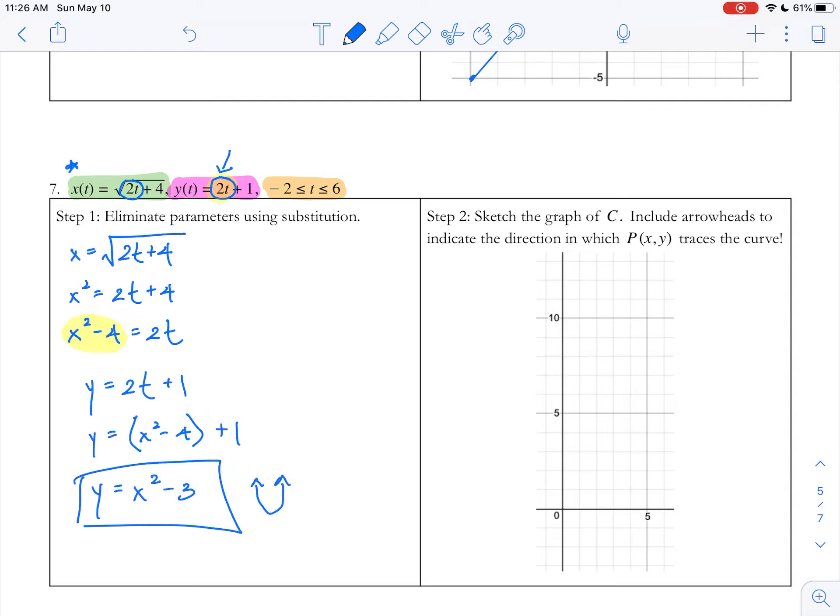The shape I'm looking at is a parabola, shifted down 3. To plot our points, let's use these bounds as starting and ending points. When I plug t = -2 into both equations, I get x = 0 and y = -3. So our starting point is (0, -3), the vertex.